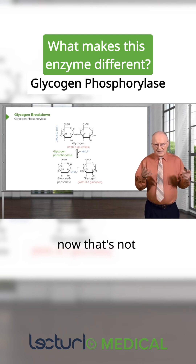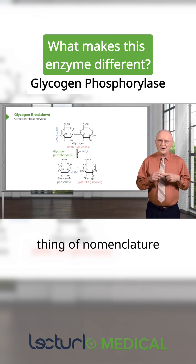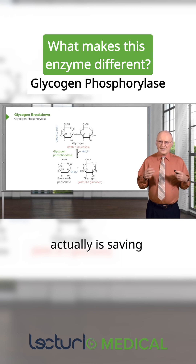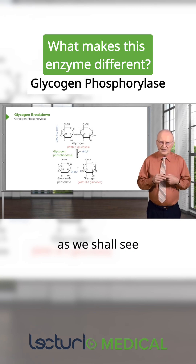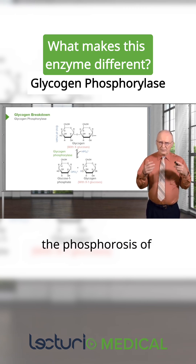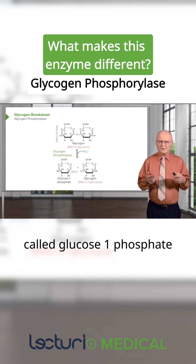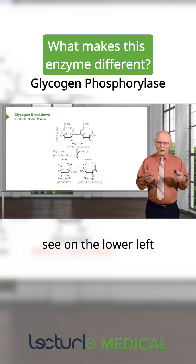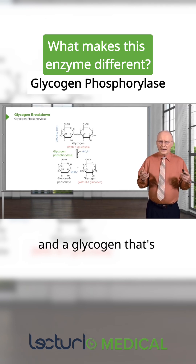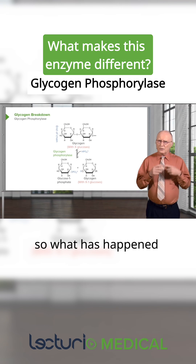That's not just an important point of nomenclature — it actually is saving the cell energy, as we shall see. The phosphorolysis of glycogen results in production of a molecule called glucose-1-phosphate, which you can see on the lower left, and a glycogen that has been reduced by one residue.